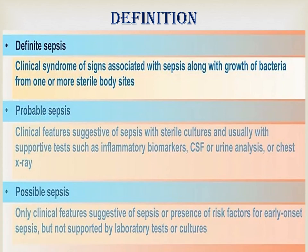Probable sepsis is defined as clinical features suggestive of sepsis with sterile cultures and usually with supportive tests such as inflammatory biomarkers, CSF, urinalysis, or chest X-ray. Possible sepsis is defined as only clinical features suggestive of sepsis, or the presence of risk factors for early onset sepsis, but not supported by laboratory tests or culture. Based on these criteria, we classify neonatal sepsis into definite, probable, and possible sepsis.